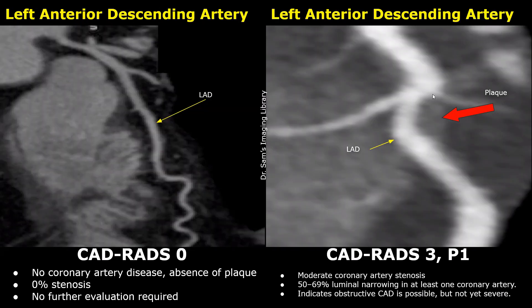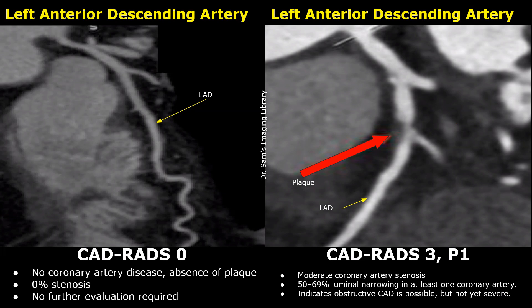This low-density plaque caused a stenosis between 50% and 69% and was also classified as CADRADS 3. Plaque burden was P1 because only one segment of the left anterior descending artery was involved. This low-density plaque in the left anterior descending artery is causing a stenosis greater than 50% of the lumen. A small plaque also seems to be on the other wall of the artery. This was graded as CADRADS 3 P1.